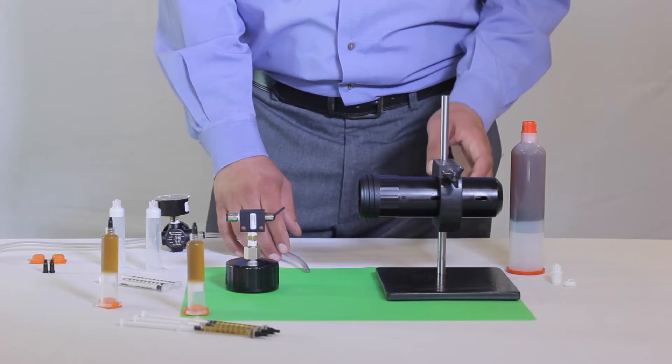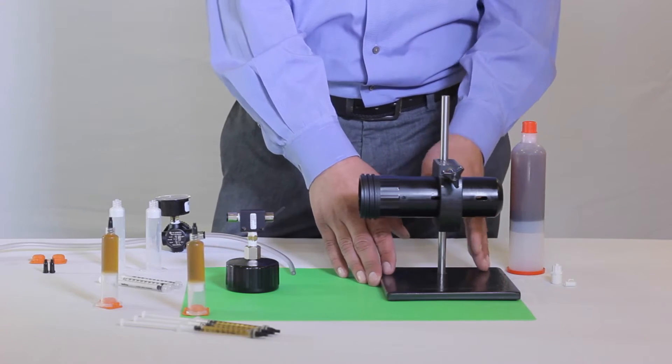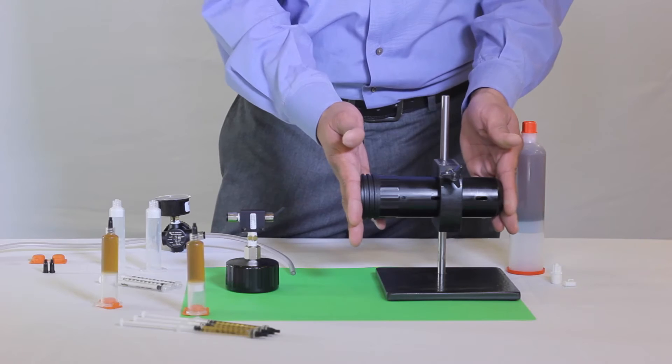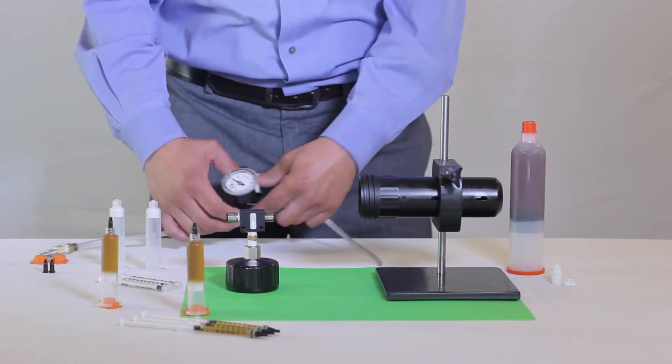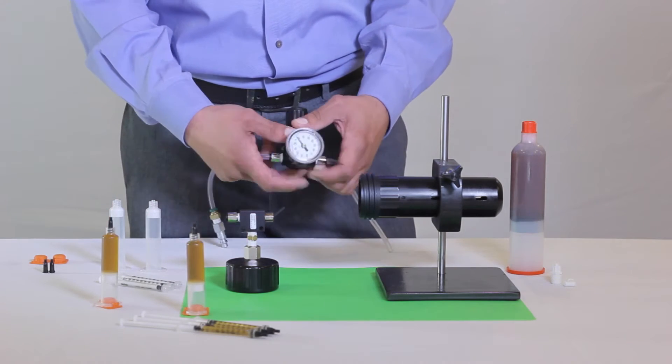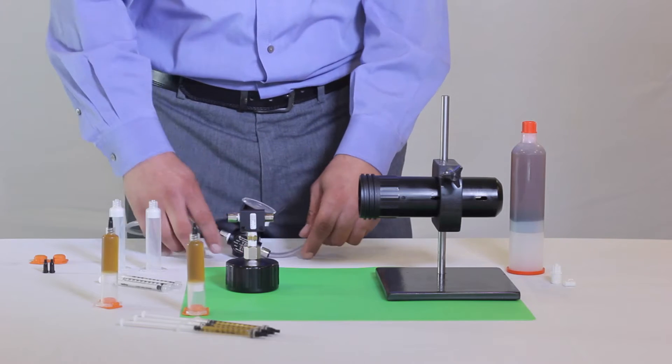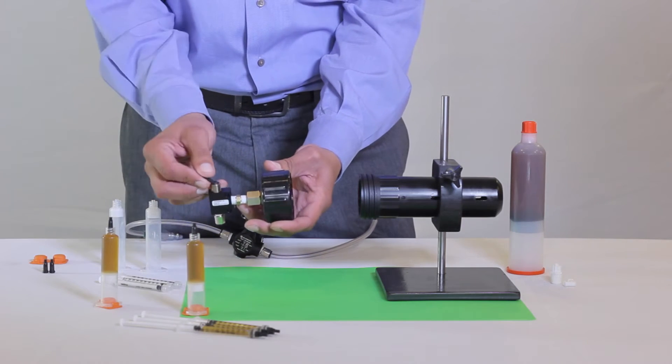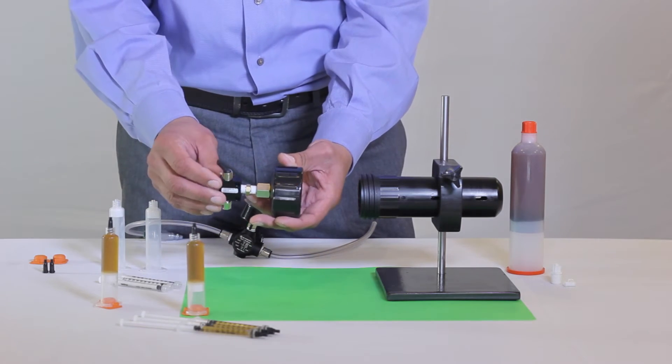This system includes a stand, an adjustable locking ring, a retainer, an external regulator and gauge, and an on-off toggle switch that starts and stops the filling process.